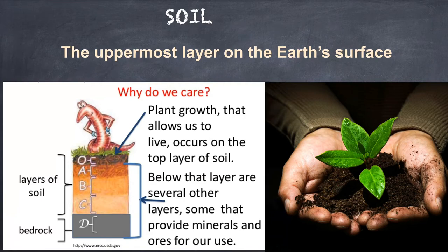Soil is very important for human beings. Humans depend on soil for many things. We grow different kinds of cereals, vegetables and fruits in the soil. We use soil to make building materials like bricks and cement. We use clay obtained from the soil to make pots and utensils. It is also home to many animals.